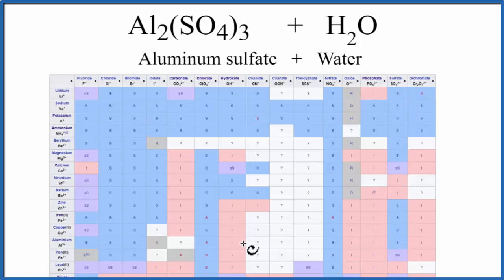So we have aluminum sulfate, which has an S. That means it's soluble in water, it's going to dissolve.